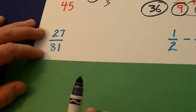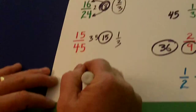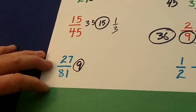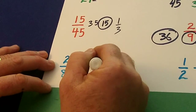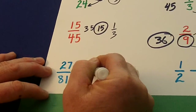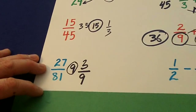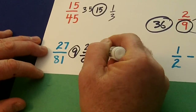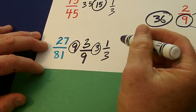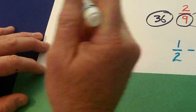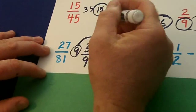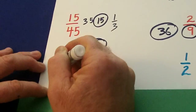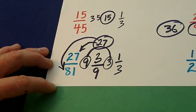Now we get 27 and 81. Well, 9 can go into those, so 9 would be the greatest common divisor — or at least we think. But when we reduce these, we get 3 over 9. We can reduce that further by 3 and get 1 third. So the greatest common divisor is — you take those two numbers we reduce by, multiply them together — 27 can go into both; that is the greatest common divisor.